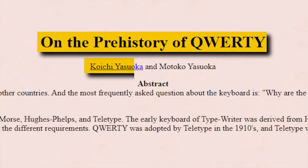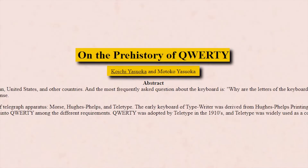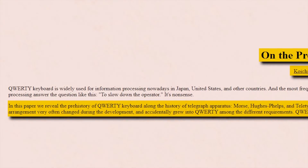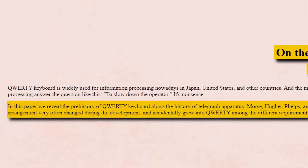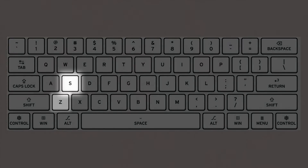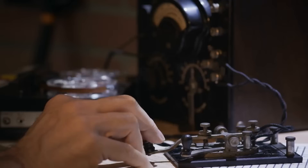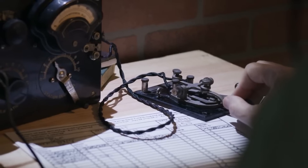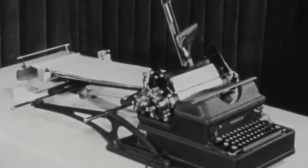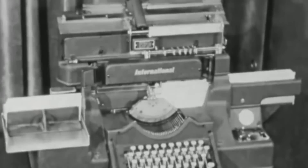However, researchers at Kyoto University suggested that this popular legend is all bunk in a 2011 paper. They argue, rather, that the QWERTY system emerged from testing with telegraph operators. These operators suggested that the letters S, Z, and E be placed close together because the Morse codes for Z and SE were similar and often confused. This would allow the operator to prepare and type the appropriate letter just with the placement of a finger. This same methodology, the paper argues, was used to place various other letters across the keyboard.